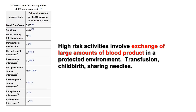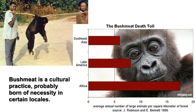We know that SIV and HIV are both spread in the same ways: sex and blood transfers. Blood-to-blood exposures, however, are 900 times more likely to result in infection than sex contact. It's therefore likely that the transmission from primate to human, called a zoonotic event, was the result of hunters trapping, butchering, and eating chimps.